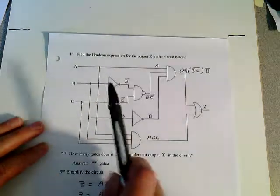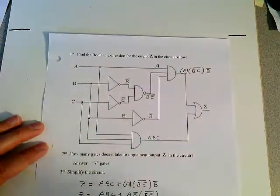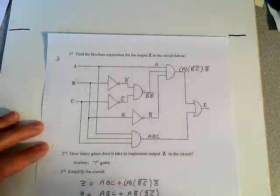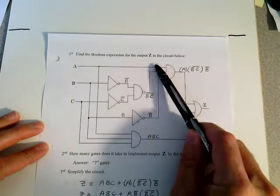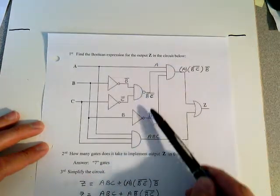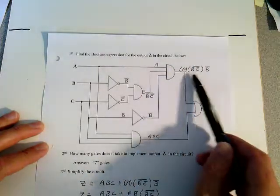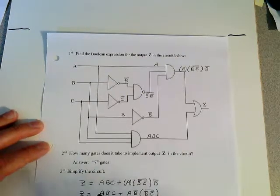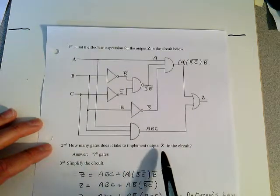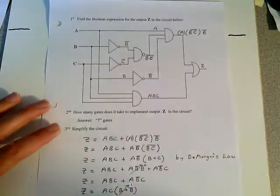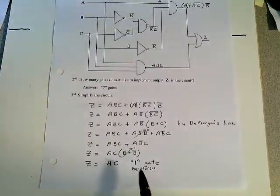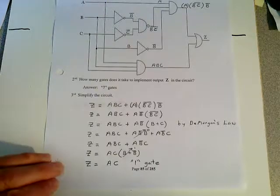On page number 85, I want you to notice that we have a circuit there. And we want you to find the boolean expression for the output Z in the circuit. What I'd want you to do now is I want you to stop the video, and I want you to go ahead and get this output expression for Z, putting these midterms in. And then answer yourself the question, how many gates does it take to implement the Z circuit? See if you can get seven, and then I want you to go through a simplification of the boolean expression and see if you get my answer down here. You have to be able to do this type of work for the exam.